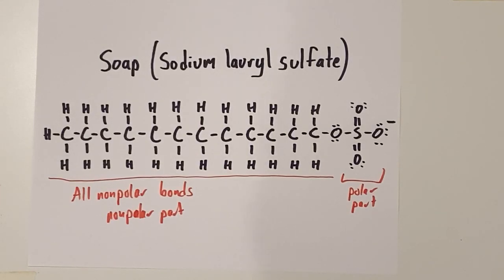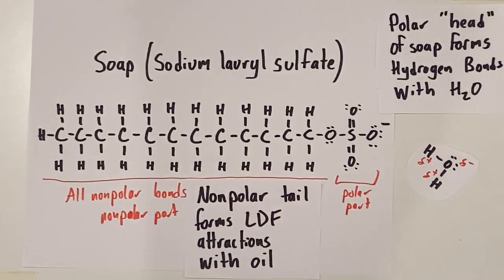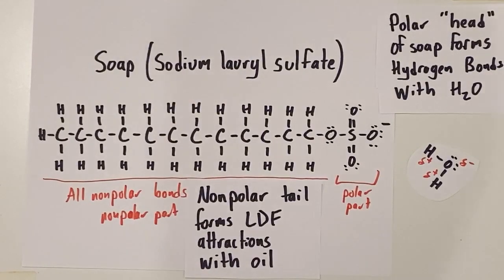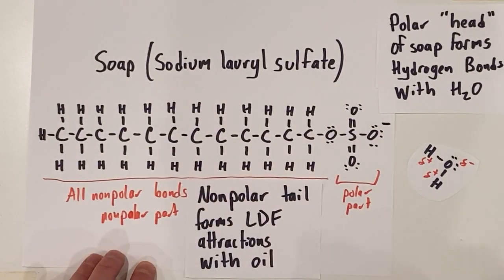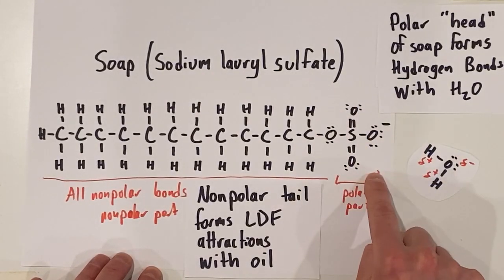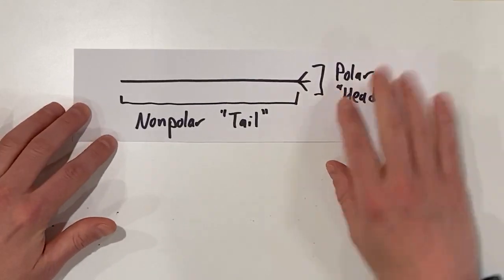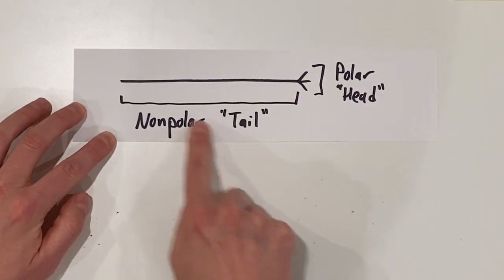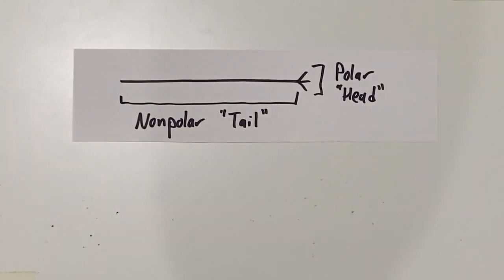So what's going to go on here? We have the polar head that's going to hydrogen bond with H2O. And we have a non-polar tail that's going to engage in London dispersion force bonding with the oil. Now, for the rest of this video, instead of using this Lewis dot diagram, I'm going to use a simplified version. The non-polar tail will be a straight line, our carbon hydrogen portion. And the polar head will be like this hand because it wants to go out and grab a water molecule.